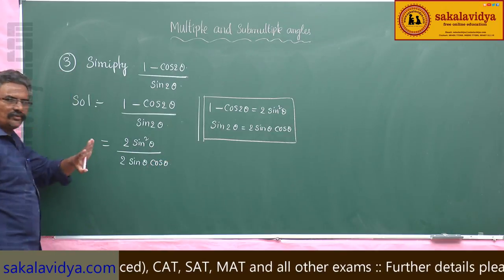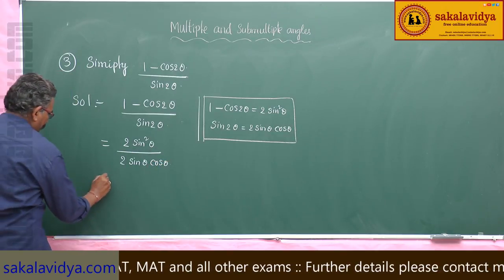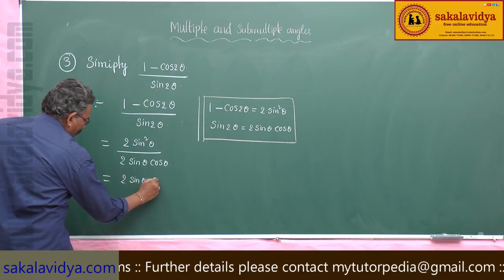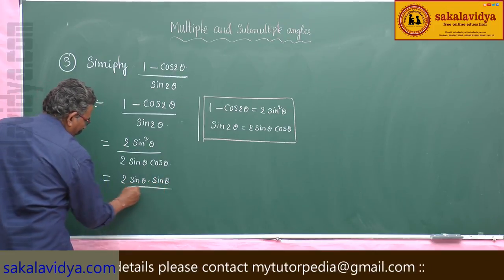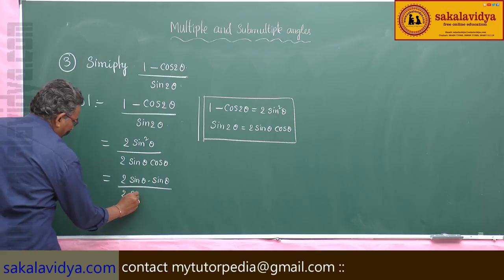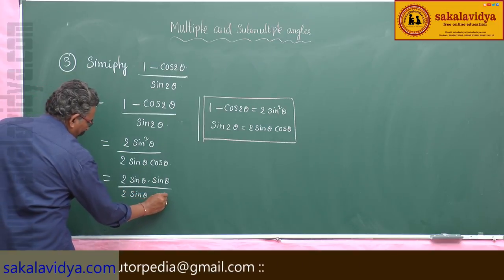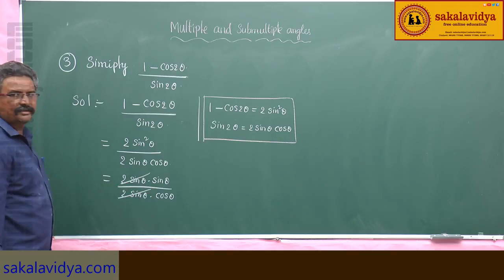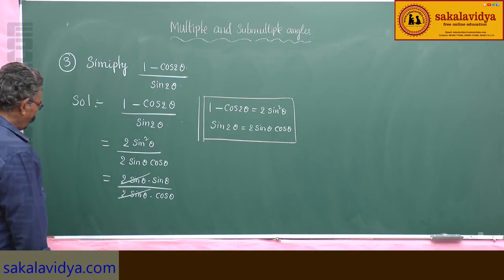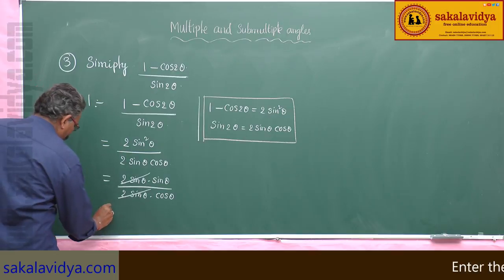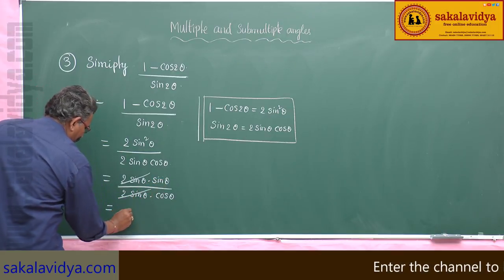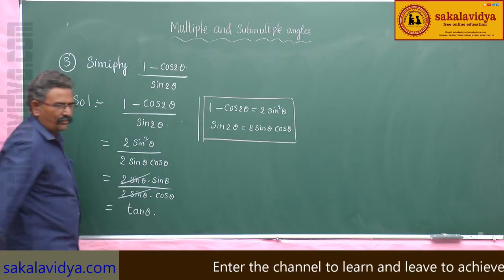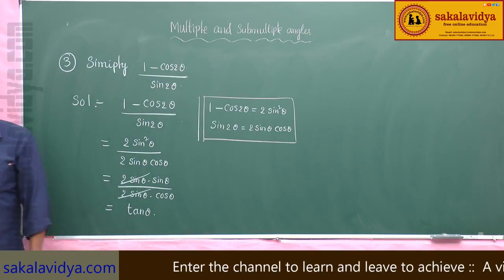The 2 sin θ in numerator and denominator gets cancelled. What we have here is sin θ by cos θ, which is nothing but tan θ. So (1 minus cos 2θ) / sin 2θ simplifies to tan θ.